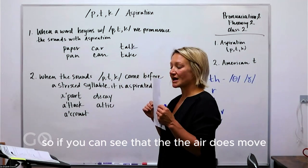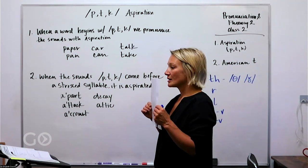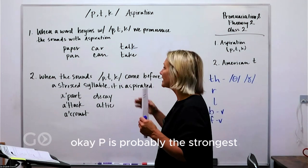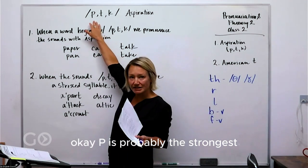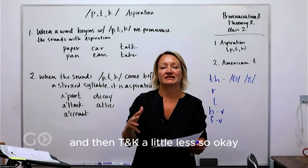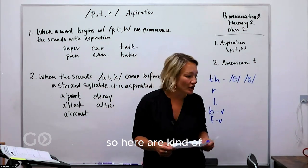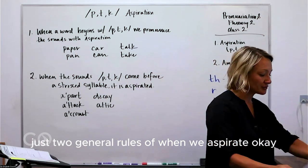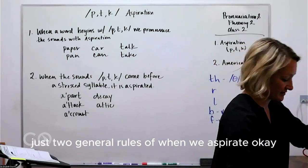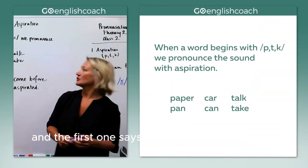So if you can see, the air does move. P is probably the strongest with the most air coming out, and then T and K a little less. So here are two general rules of when we aspirate.